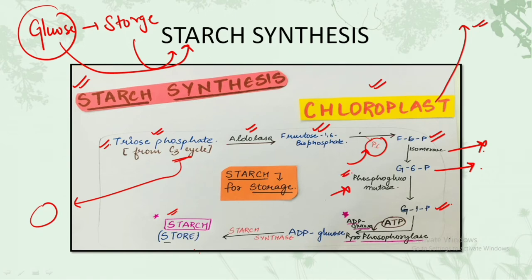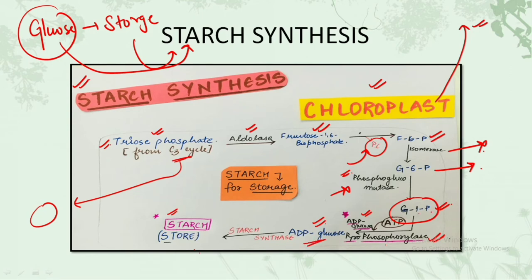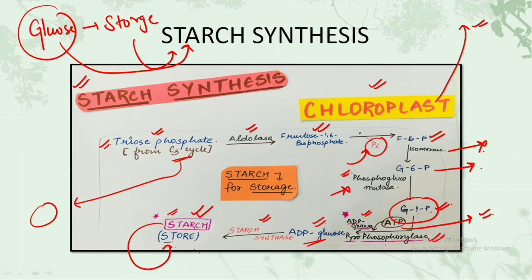Up until this point, the steps are the same for both sucrose and starch synthesis. The difference comes here: glucose 1-phosphate gets converted into ADP glucose by the enzyme ADP glucose pyrophosphorylase. There is also one usage of ATP in this process. In the final step, this ADP glucose gets converted into starch by the enzyme starch synthase, which is the storage form of glucose.